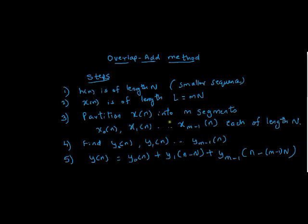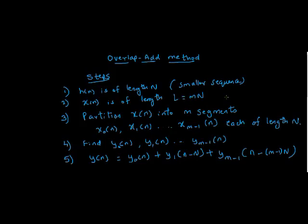There are some steps involved to calculate convolution of two signals using the overlap-add method. I will go through all the steps now — it will be clear once we solve an example. Let's say h of n is of length N; this is the smaller sequence. The larger sequence length will be capital L, which equals m times N. We do this because we want to get an integer m, so that we divide the whole x of n into m segments, as seen in the third step — partitioning x of n into m segments, each of length N.